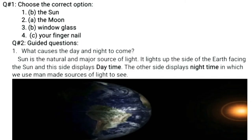Take out your pencils and copies and start writing guided quiz number 1. What causes day and night? I have shown in a picture that the sun's rays fall on the earth — the side where sun rays are falling has daytime, and the other side where no sunlight reaches has nighttime. The sun is a natural source of light. It lights up the side of earth facing it, while the other side displays nighttime, in which we use man-made sources of light to see.